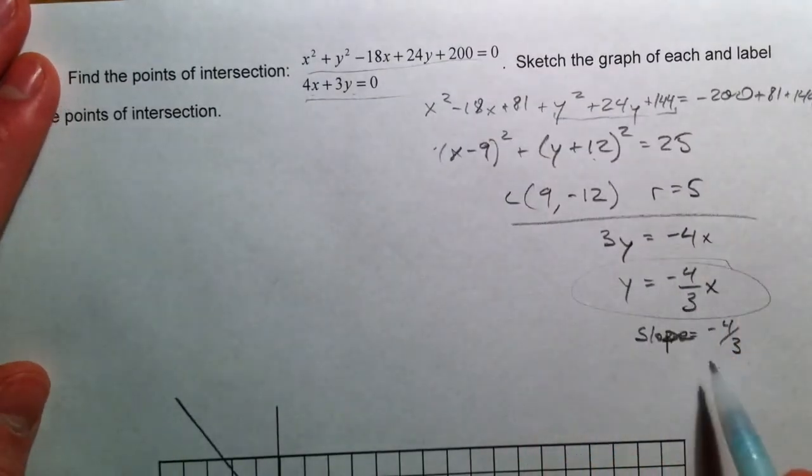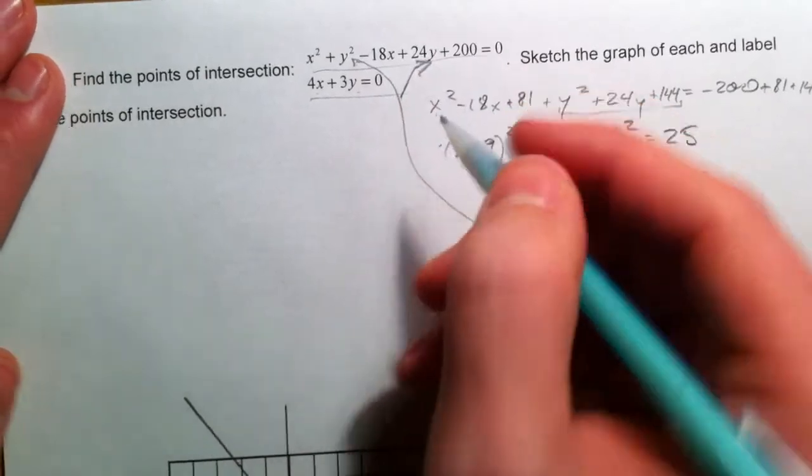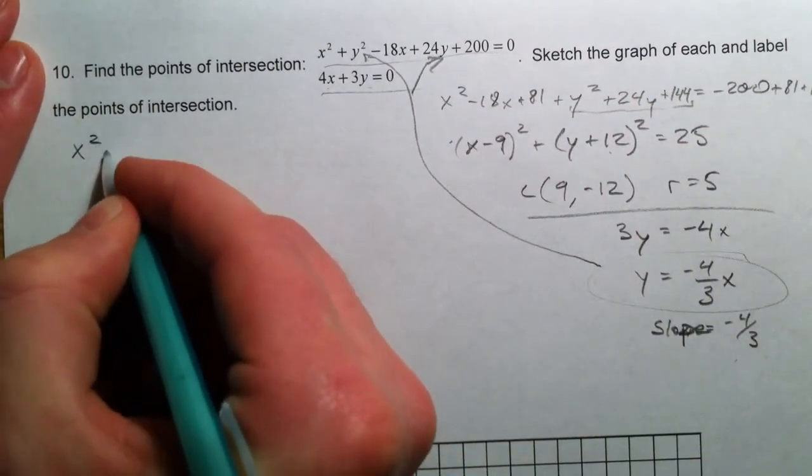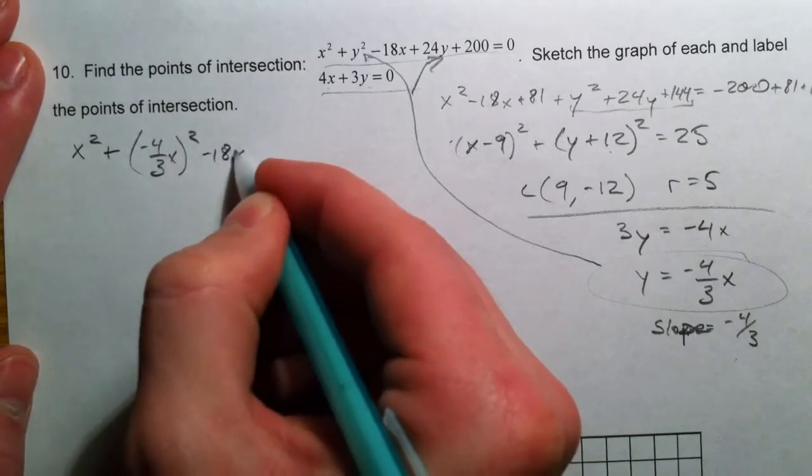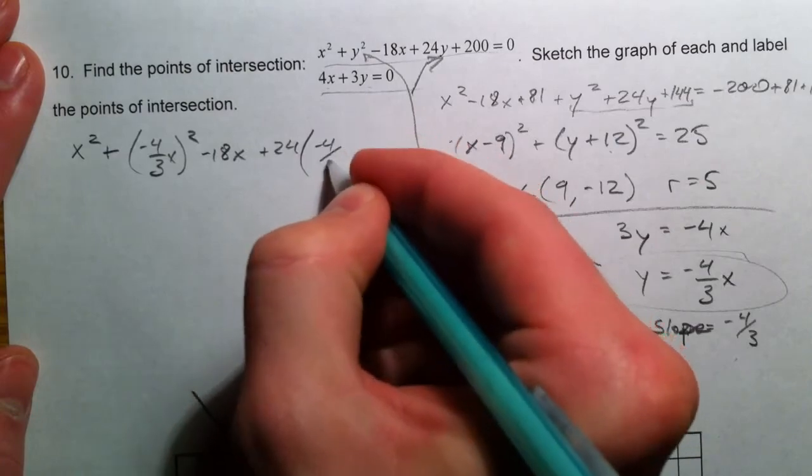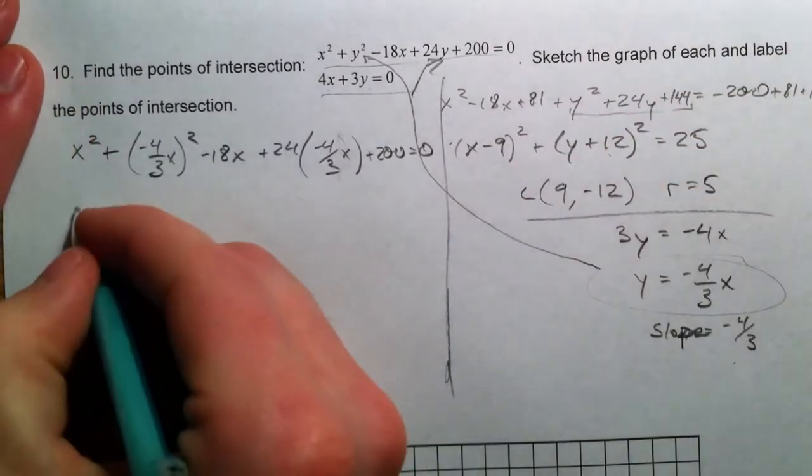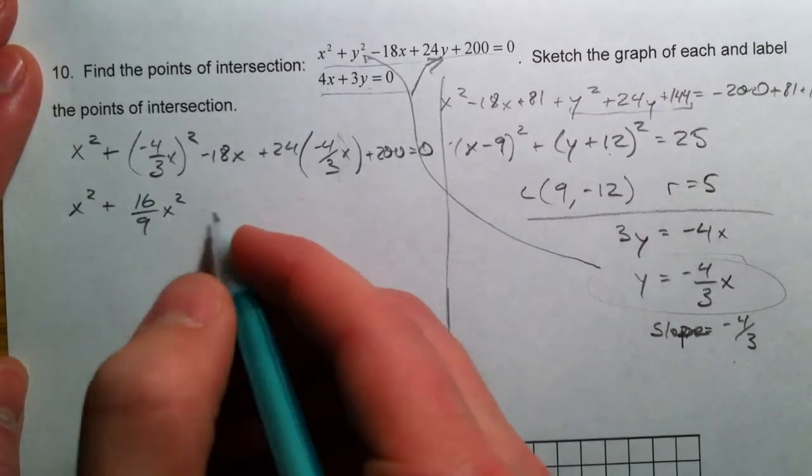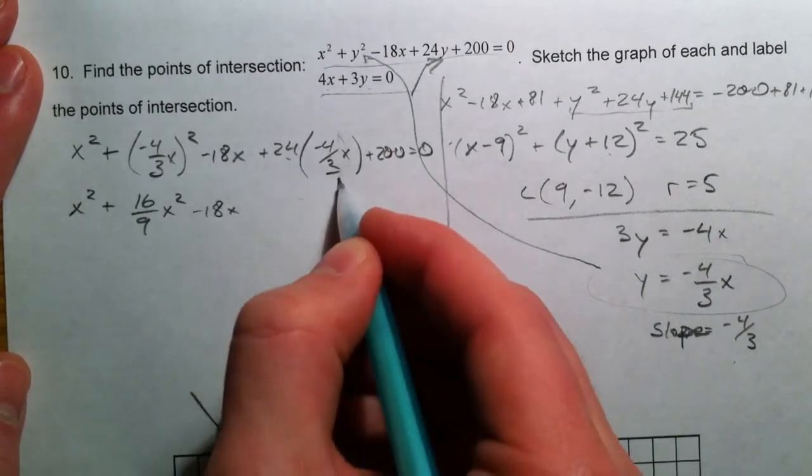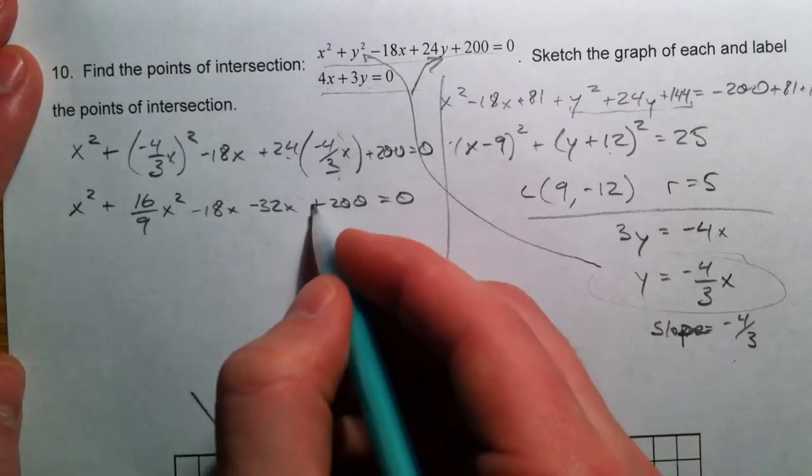So, we already solved for y. So, why don't we just use substitution to plug in for y. So, x squared plus negative 4 thirds x squared minus 18x plus 24 times negative 4 thirds x. Plus 200 equals 0. So, 16 over 9 x squared minus 18x. 24 divided by 3 is 8 times 4 is negative 32x.